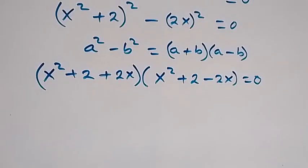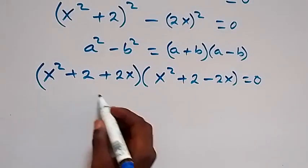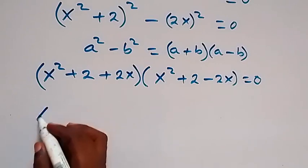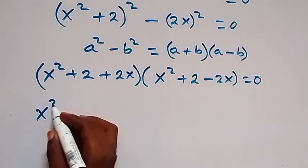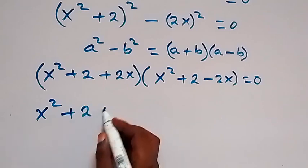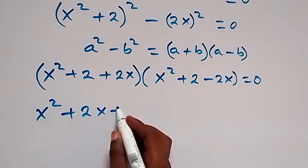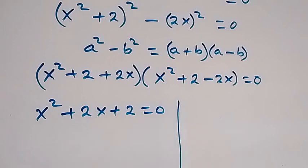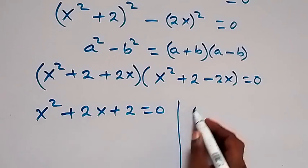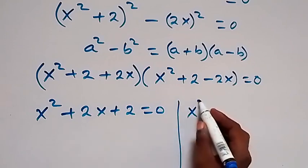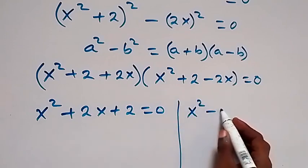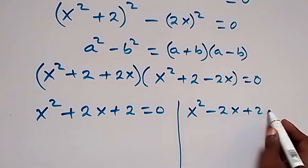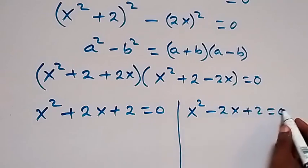We have two cases. Rearranging, the first gives us x squared plus 2x plus 2 equals 0, and the second gives us x squared minus 2x plus 2 equals 0.